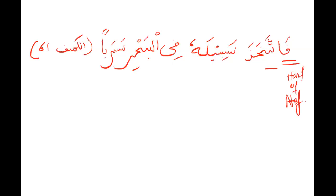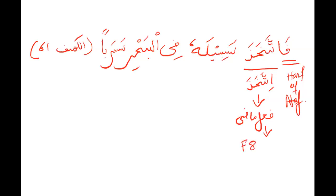Now, this word — is it an ism, fail, or harf? Fail. Ittakhada — fail-e-maadi. It is a very famous fail-e-maadi. And can anybody tell me what family it is from? It's from the Ikhtaraba family — yes, F8. Ikhtaraba. We had a lot of days trying to figure that out. And what is the version? What is the inside doer? Huwa — huwa.